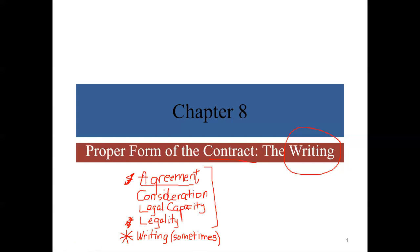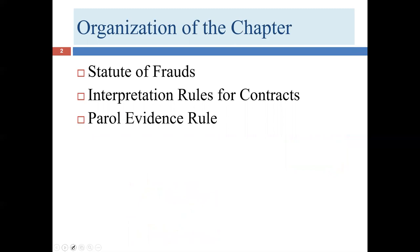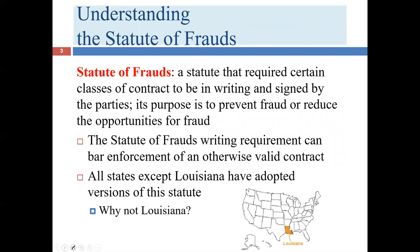We're going to cover three topics in this chapter. In this first lecture, we'll get to the first item: the statute of frauds. In our second lecture, I expect to cover the other two items — interpretation rules of contracts and the parol evidence rule. This first topic takes up a little over half of our chapter and is kind of its own thing, with separate issues. So that's what we're going to focus on during this lecture today.